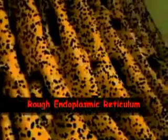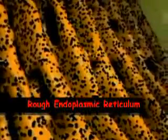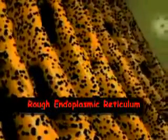There are two different types of ER. One type, called rough endoplasmic reticulum, appears to be covered with tiny spheres. Rough endoplasmic reticulum extends from the nucleus and is indeed covered with small structures called ribosomes, which are responsible for the rough appearance.